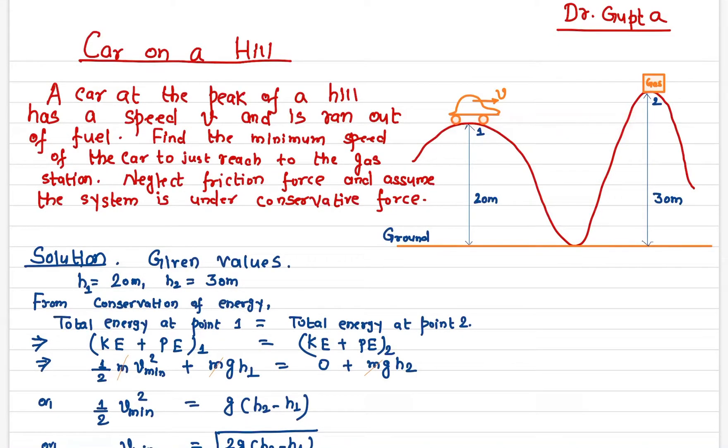You must need some additional speed that needs to be imparted to the car so that it can reach the gas station. In other words, what is the minimum speed required to make this car get to the gas station? Let's find it out.